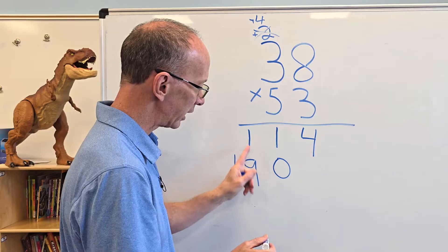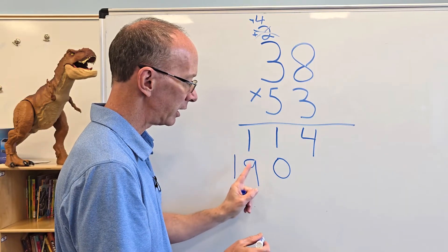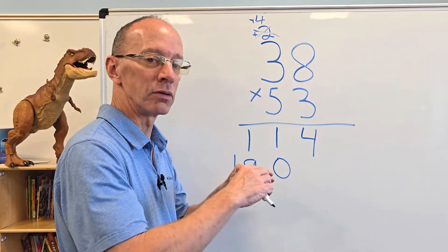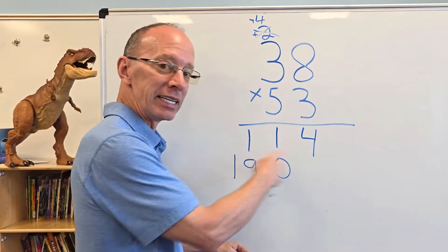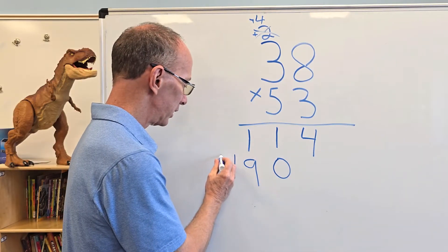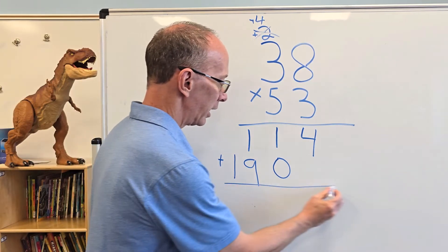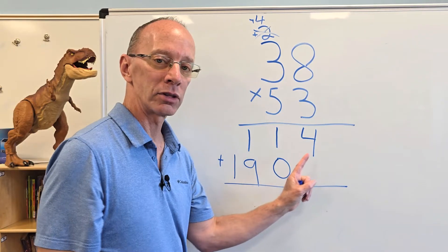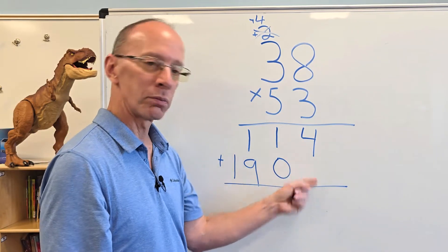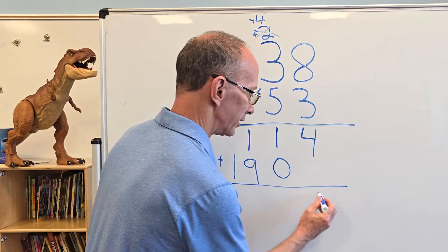So now we're going to add these numbers here. Put the addition symbol, and now I just start adding. I start with the ones, bring that 4 down. 4 plus 0 is 4, so I put the 4 right there. And then 1 plus 0 is 1.